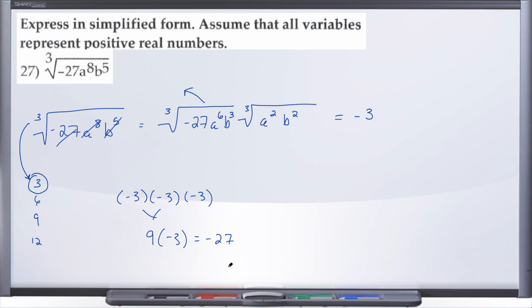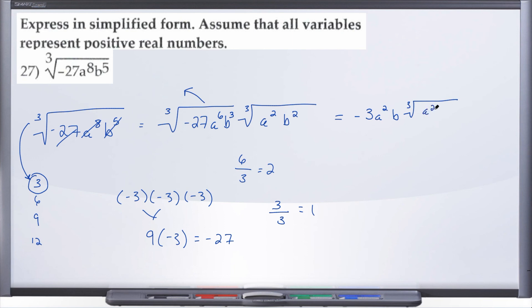Now let's see what a to the sixth comes out as. When removing variables from the good stuff, you take the exponent and divide it by the index. So 6 divided by 3 gives us 2, meaning a comes out as a squared. For b, we take 3 divided by 3, which gives us 1, so b comes out as b to the first — and we don't need to write that exponent of 1. Now we rewrite our bad stuff radical: the cube root of a squared b squared. Our final answer for number 27 is negative 3 a squared b times the cube root of a squared b squared.